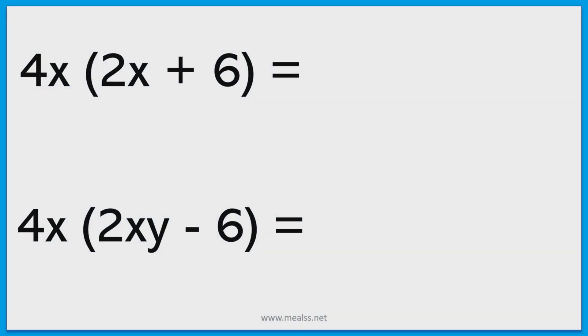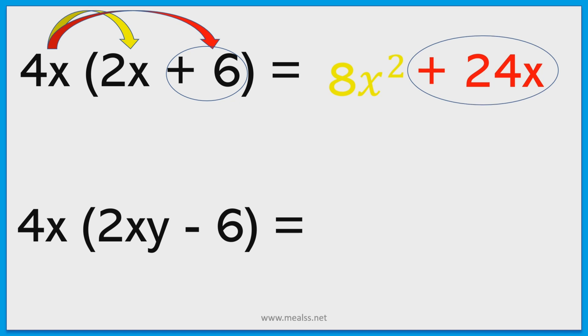4x multiplied by 2x this time is going to give us 8x squared. We multiply the like terms together. 4 times by 2 is 8. x times by x is x squared. 4x times by 6 is going to give us 24x. The positive sign makes that a positive answer.